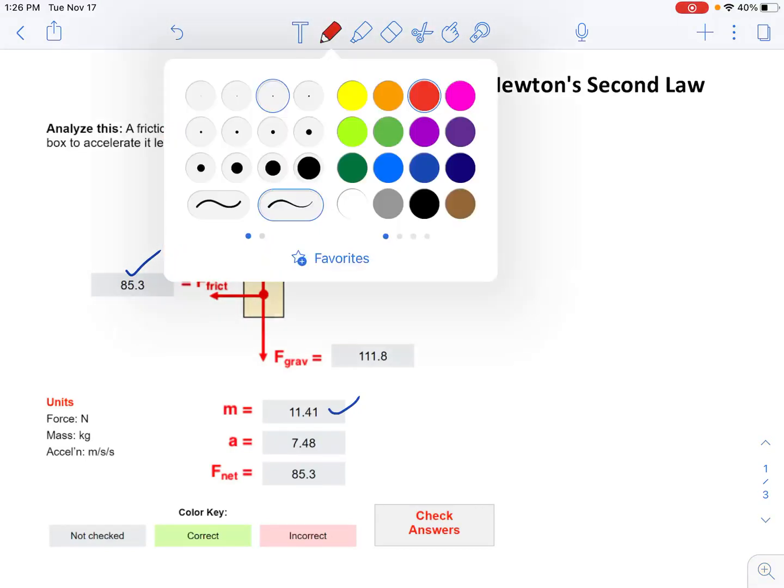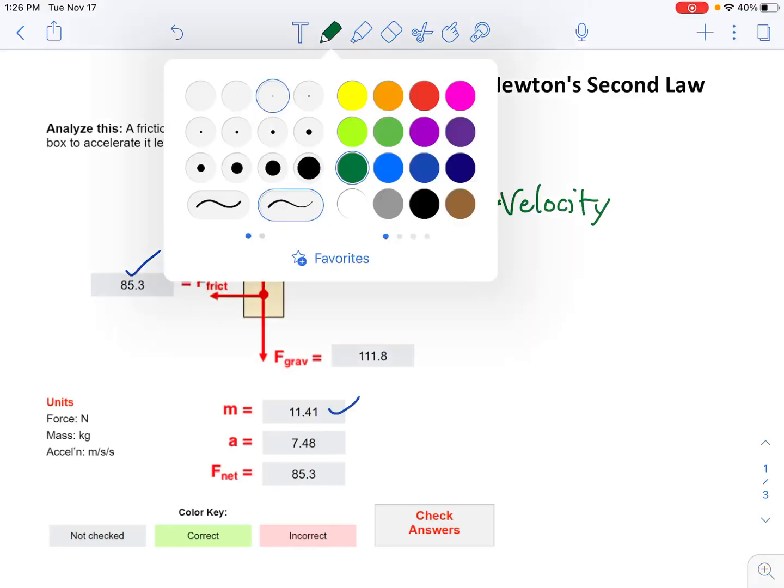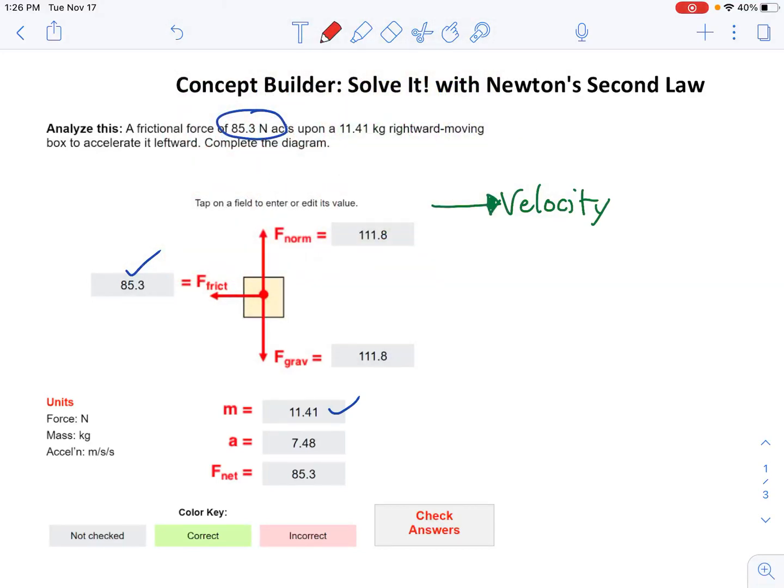Now, the other thing to note is that it's a rightward moving object, so the velocity is to the right. The box accelerates leftward. As you know from today's discussion, the net force and acceleration always act in the same direction. So it might be moving to the right, but friction is slowing it down to the left.